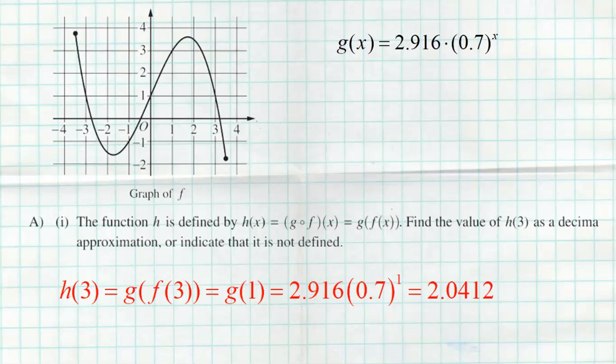Here's me breaking down that work. First plugging 3 into f, we clearly get 1 looking at our graph. We were also told that 3,1 was one of our points on function f. Then we're going to take 1 and plug it into g, 2.916 times 0.7 raised to first. Definitely want to grab and use your calculator for that, but we get 2.0412.